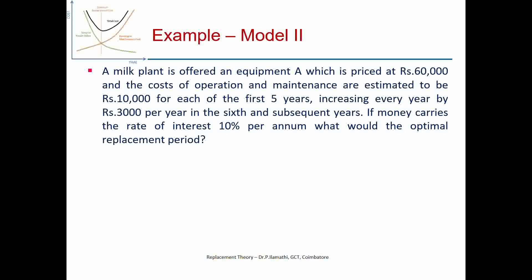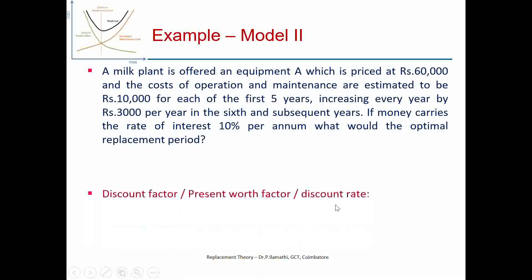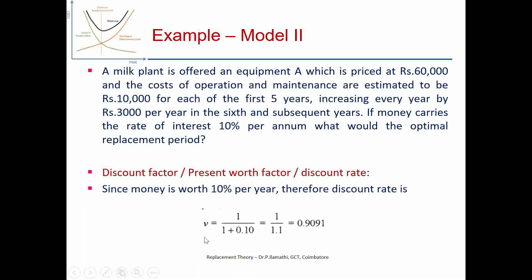We are going to determine the optimum replacement period based on the weighted average annual cost — where it gives the lowest value and then increases, we stop at that year. First, we calculate the discount factor V = 1/(1 + i). With i = 10% = 0.10, V = 1/1.1 = 0.9091.